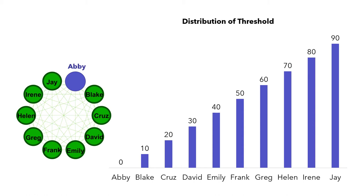Abbey has a threshold of zero, meaning she needs zero individuals to adopt the idea before she does. It's probably because Abbey is very independent-minded and comfortable making her decision without knowing how others decide. Another possibility is that Abbey has been thinking about a similar idea for a long time and immediately adopts it once presented. It is also possible that the idea comes from Abbey's boss, who is a bully, so Abbey adopts it even if she thinks it's the worst idea she's ever heard.